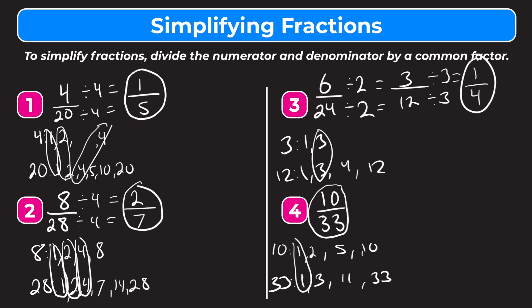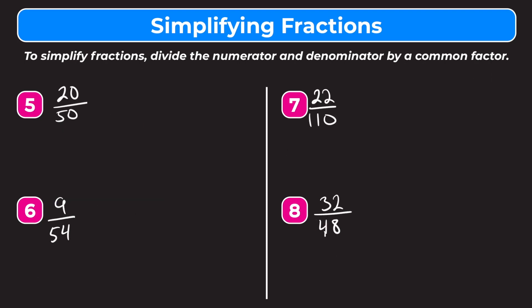Sometimes you'll get problems like this and that's okay. As long as you check that the numerator and denominator don't have any common factors greater than 1, you can be confident the fraction is in its simplest form. As you continue to practice simplifying fractions, you'll start to notice factors without having to list them out and you'll get faster at it. Look for common factors right off the bat.